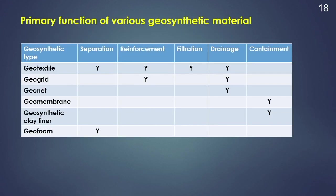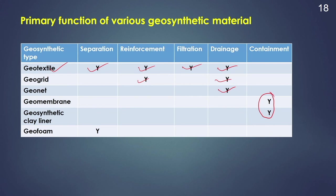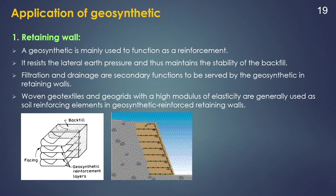Looking at the various functions of different geosynthetic materials: geotextile can perform separation, reinforcement, filtration, and drainage functions; geogrid can act as reinforcement and drainage; geonet can act as drainage; geomembrane and geosynthetic clay liner can act as a containment system; and geofoam can act as a separation function. There are various applications of geosynthetics, particularly it is most widely used for retaining walls or slope stability.